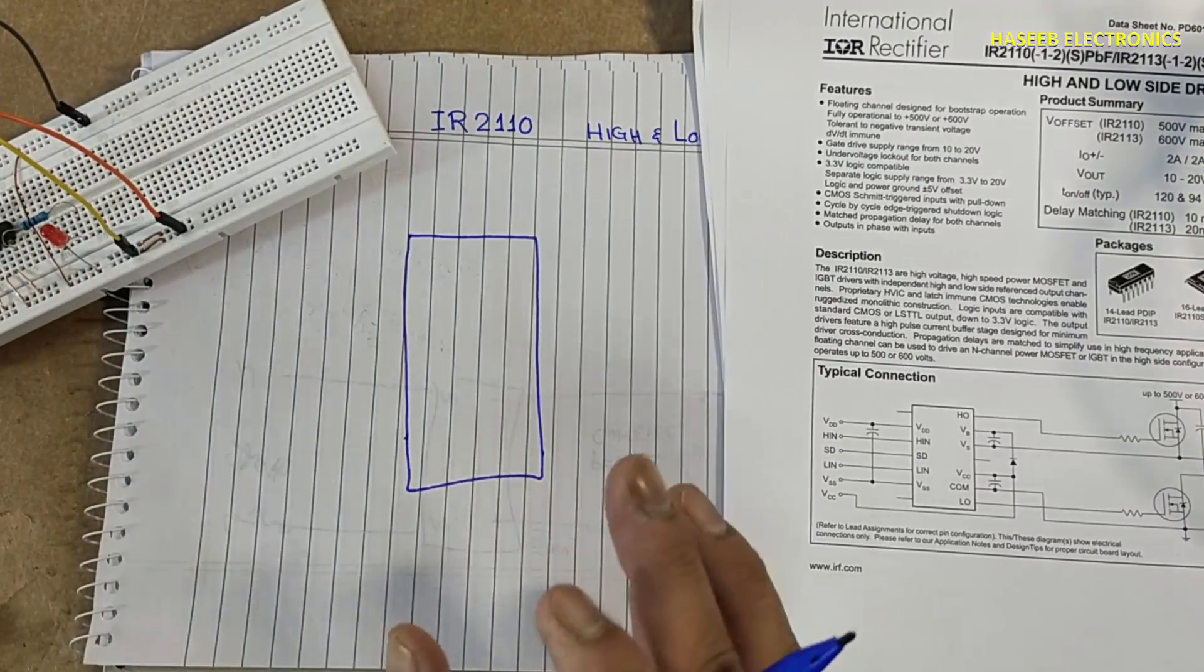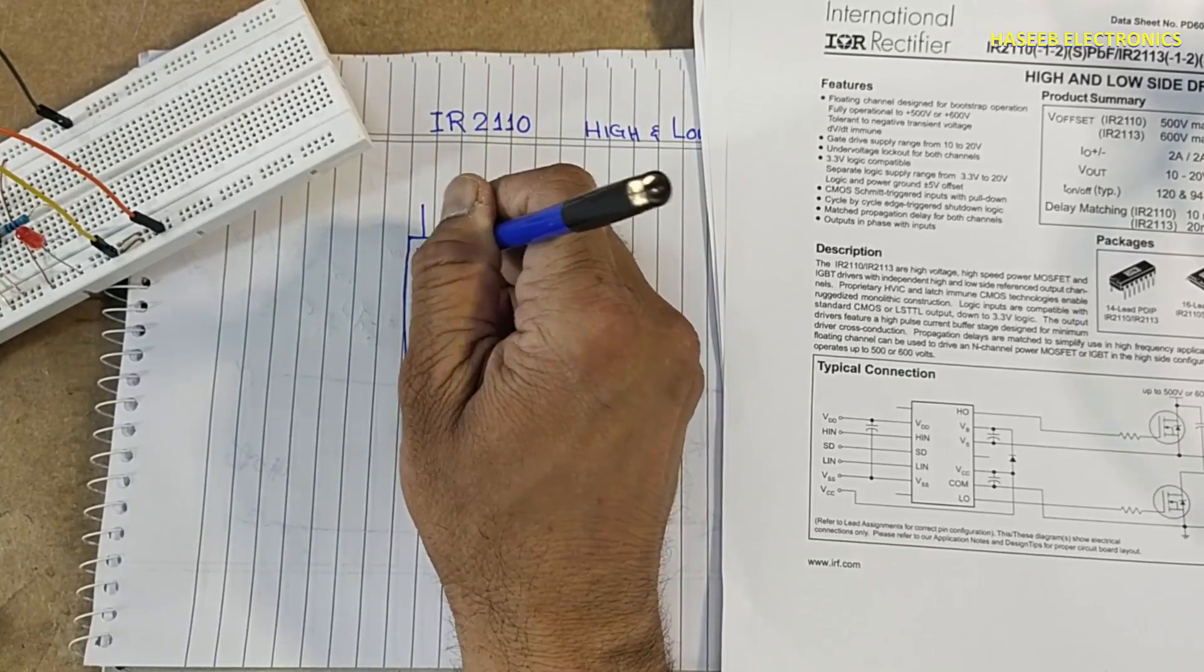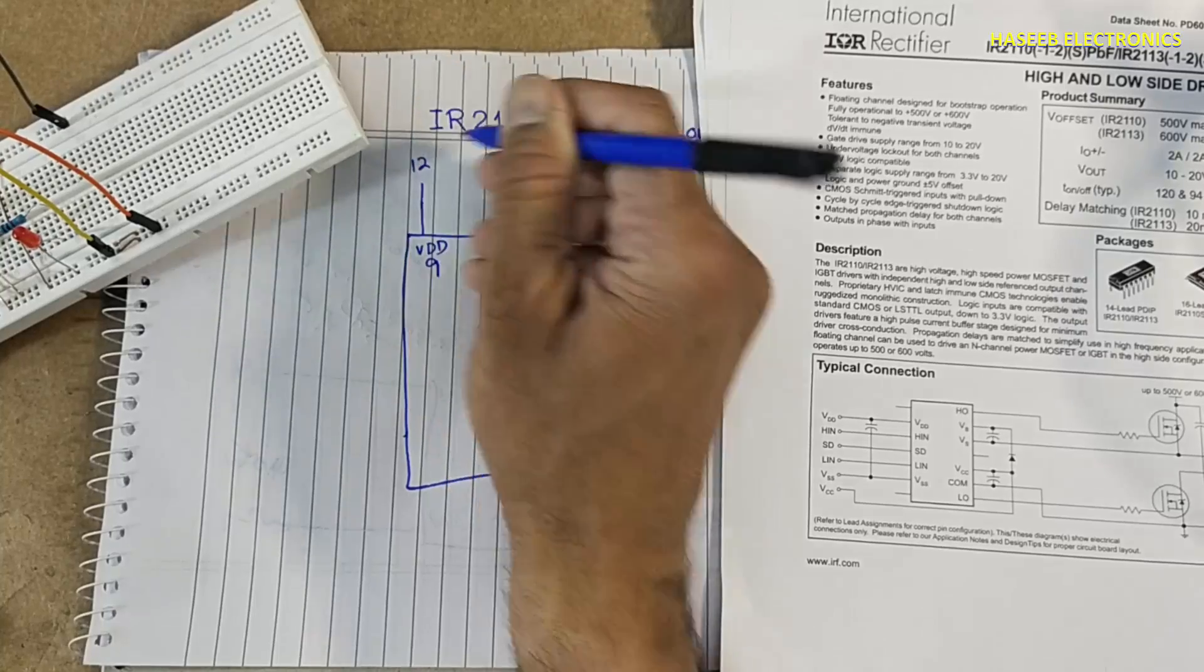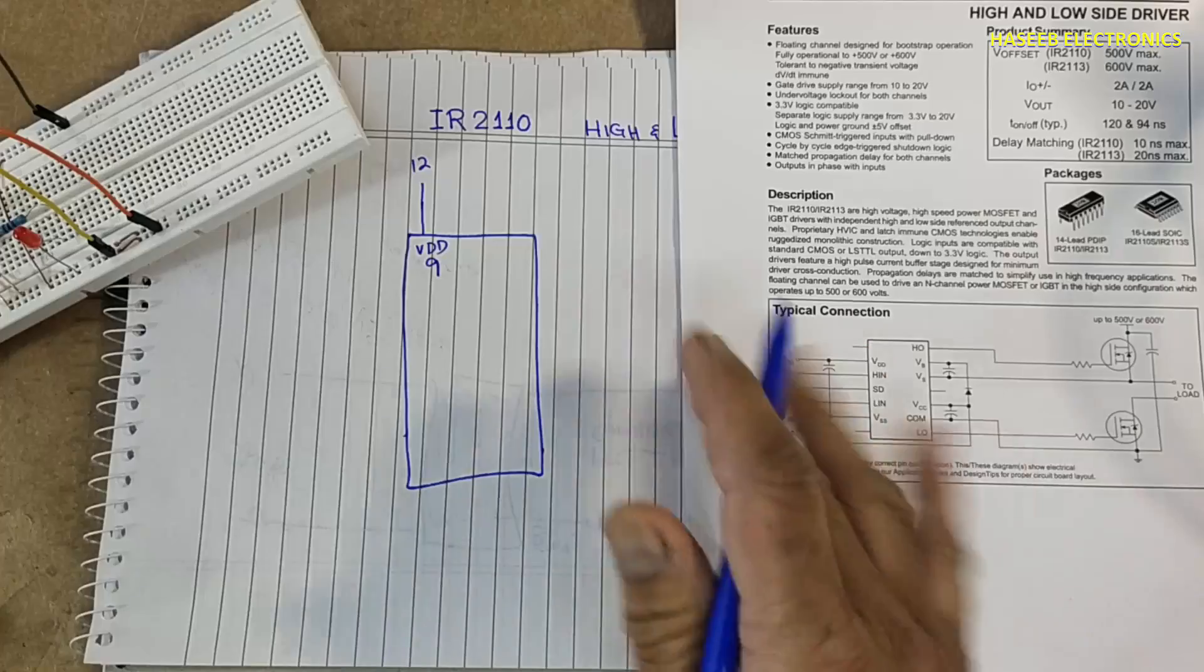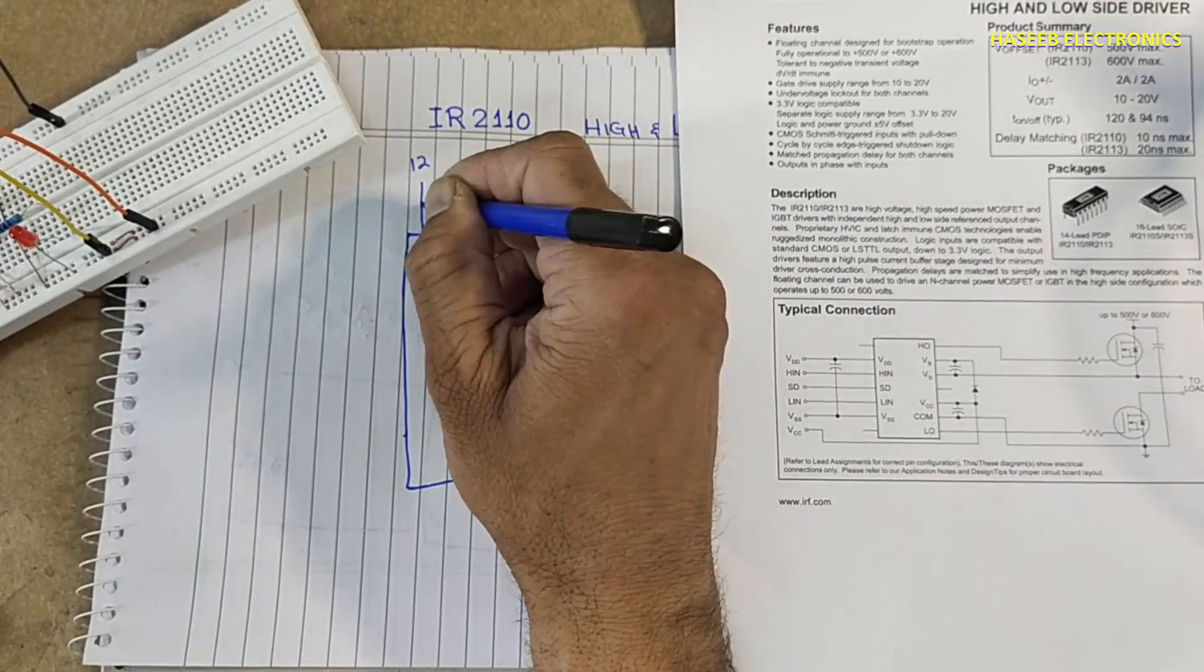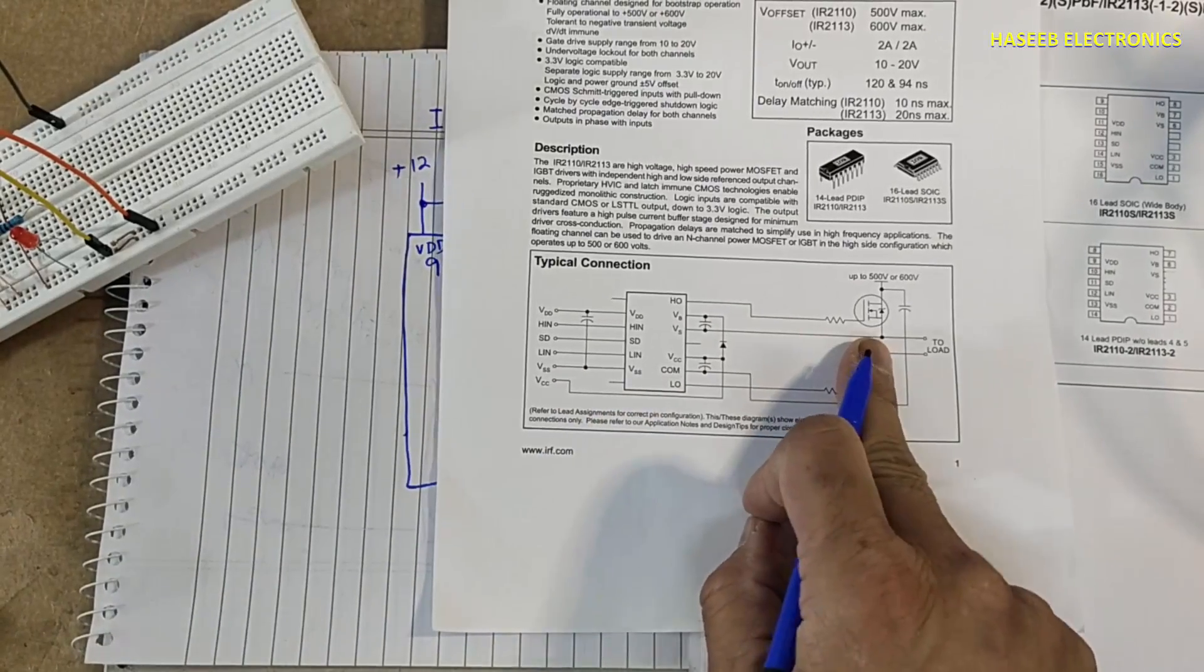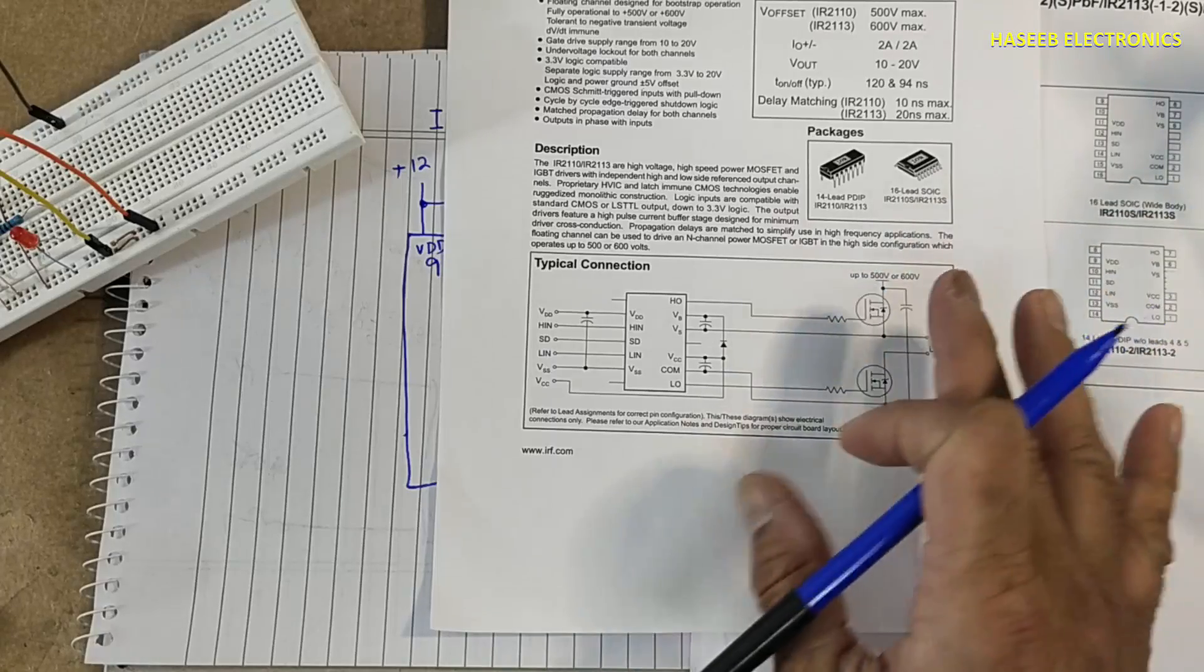We will take 12 volt power supply. We will connect power supply to VDD pin, that is pin number 9, and we will connect also this collector pin to the same point, that is pin number 3. When we are using with MOSFET and we are driving high side MOSFET with high voltage, at that time we need bootstrap diode to isolate the high side section.